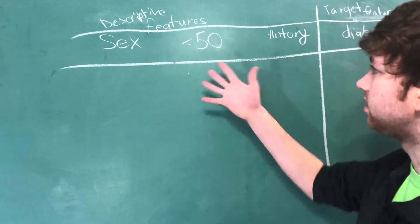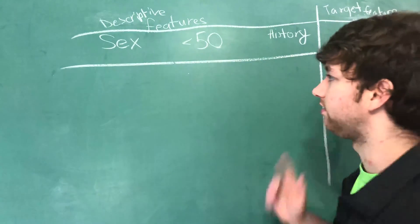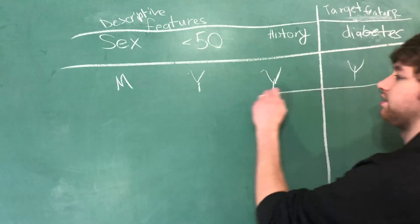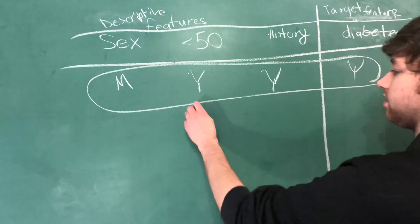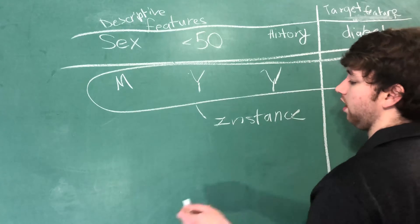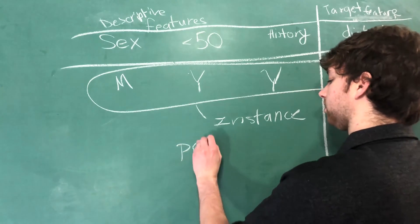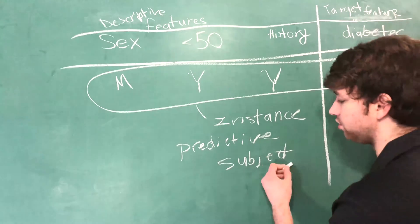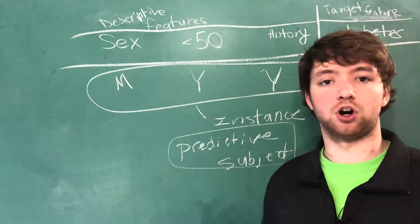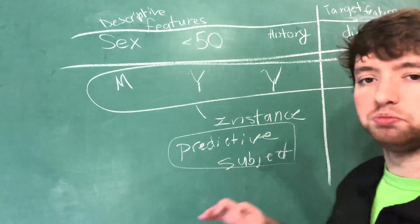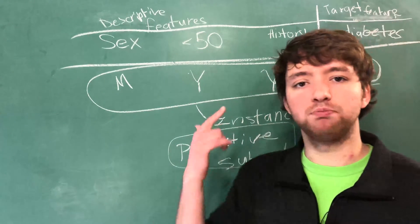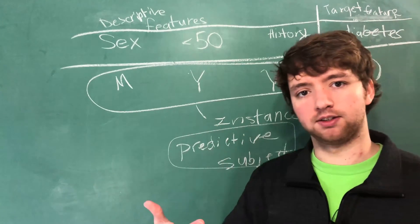So now, what is this data describing? If we had one value in here, what is this called? Well, this is an instance of what we call the predictive subject. Let's break this down. The predictive subject is the thing we are trying to make predictions on. In this case, the predictive subject would be a person or a patient. An instance of that is one particular person or instance.